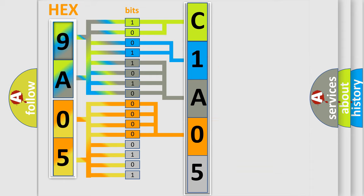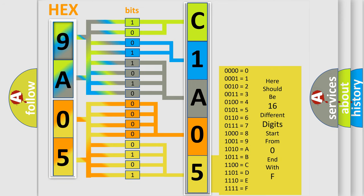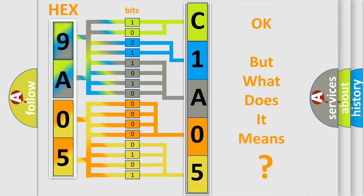A single byte conceals 256 possible combinations. We now know in what way the diagnostic tool translates the received information into a more comprehensible format. The number itself does not make sense to us if we cannot assign information about what it actually expresses.